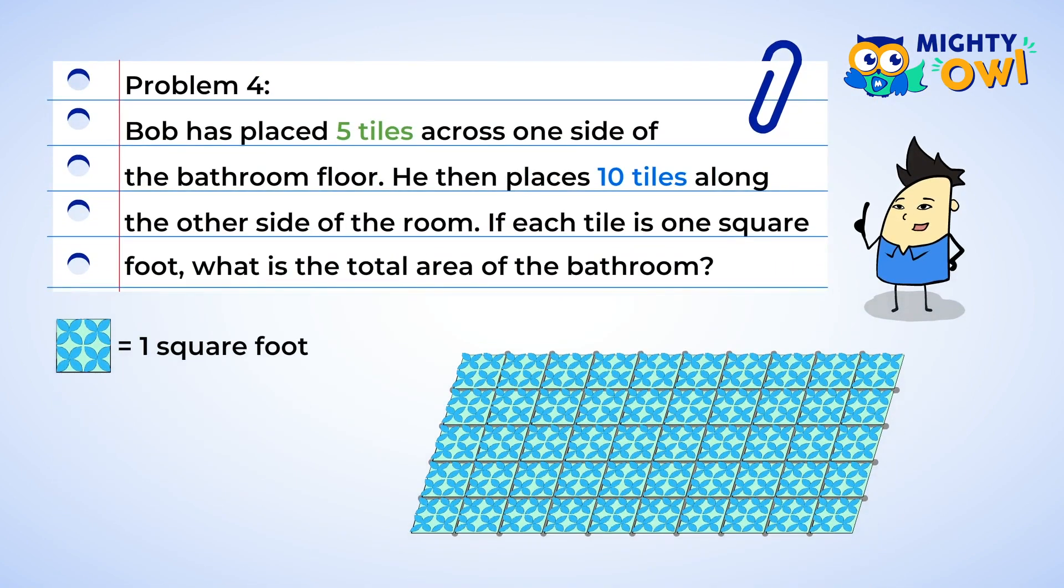Bob is tiling his bathroom floor and he's placed five tiles across one side of the room. And then he places 10 tiles along the other side of the room. If each tile is one square foot, what is the total area of the bathroom?